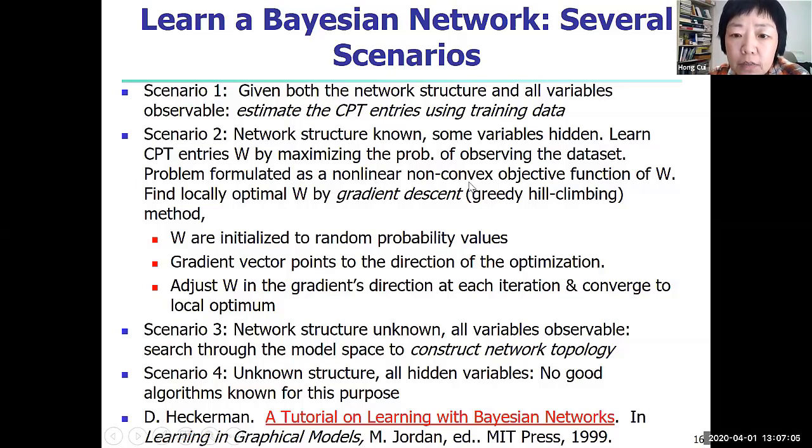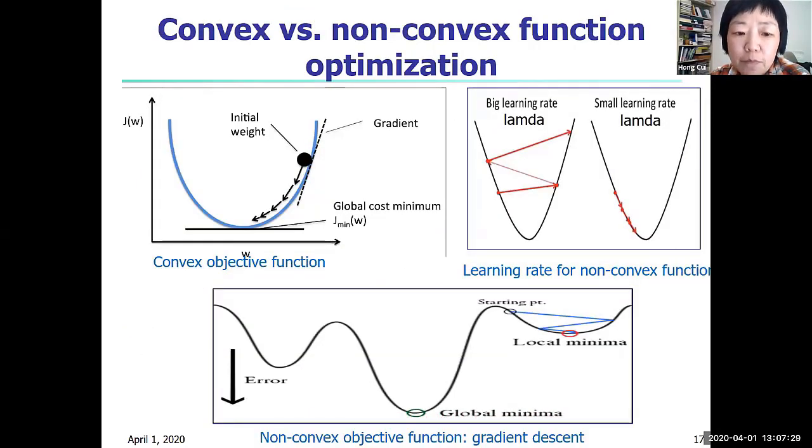This objective function basically says: find the set of weights that would increase the chance for the system to observe the data that's given. So this problem can be formulated as a non-linear non-concave objective function, which I depicted here. I don't actually know what's the shape of the function, but it's non-linear and it's non-convex.